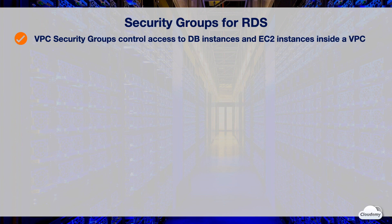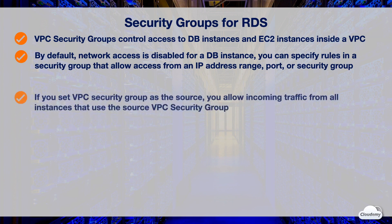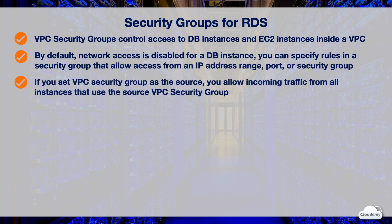You only need them when you work with EC2 classic. By default, network access is disabled for a DB instance. You can specify rules in a security group that allow access from an IP address range and port, or another security group. Each VPC security group rule enables a specific source to access a DB instance in a VPC that is associated with that VPC security group. The source can be an IP range or another VPC security group.